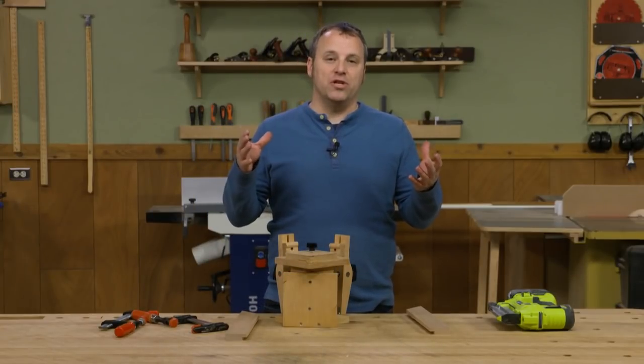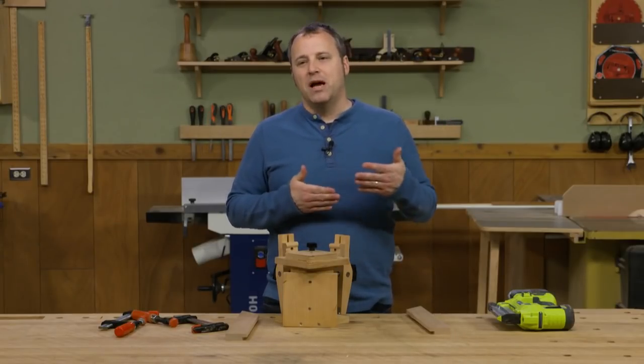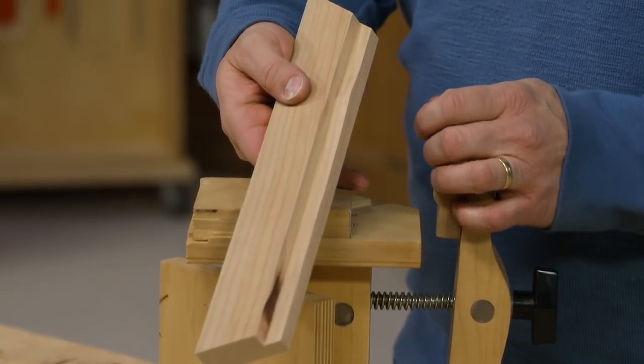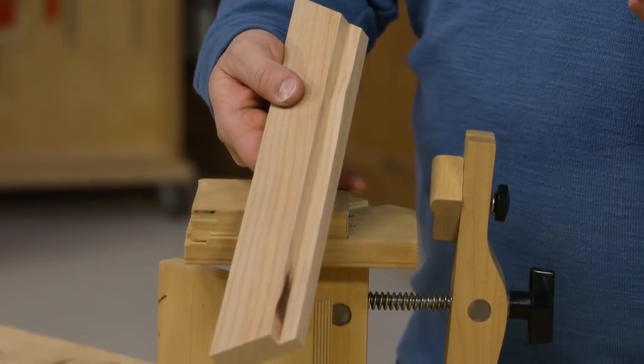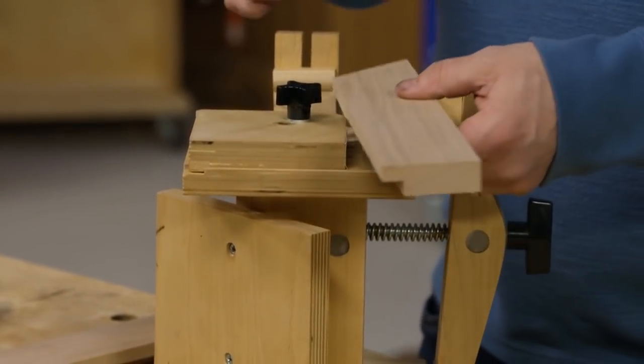Now a lot of times that works really well for just straight up mitered frames that you need to do or mitered moldings. But if you're working with like picture frames or a mitered door frame, a lot of times it's going to have a rabbet on the back face to accept a panel or paint or glass or artwork or whatever.